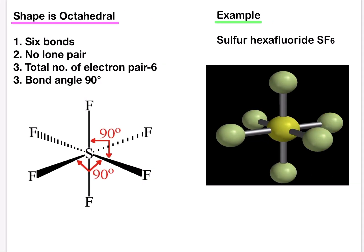Let's move to the next example. Sulfur hexafluoride SF6, shape is octahedral. Sulfur hexafluoride has six bonding pairs of electrons and no lone pair. The equal repulsion between the electron pairs results in the structure is octahedral. All fluorine, sulfur, fluorine bond angles are 90 degrees. So it has an octahedral structure.